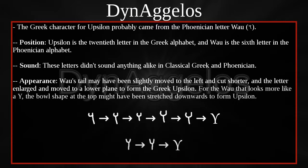For the WAU that looks more like a Y, the bull shape at the top might have been stretched downwards to form UPSILON.